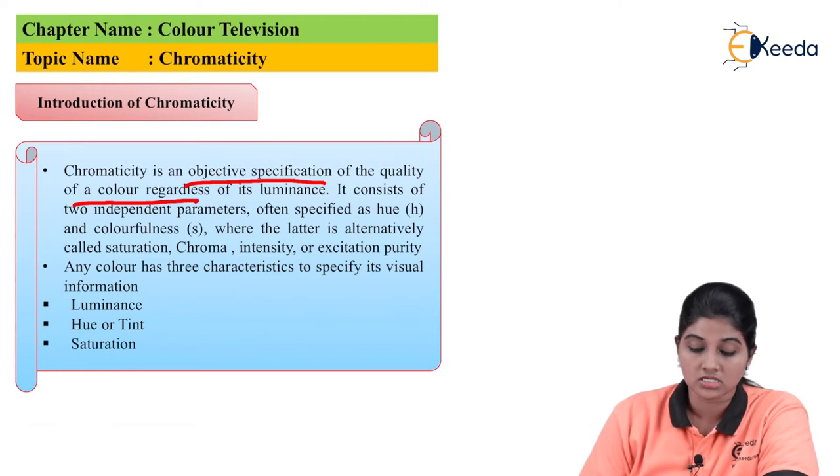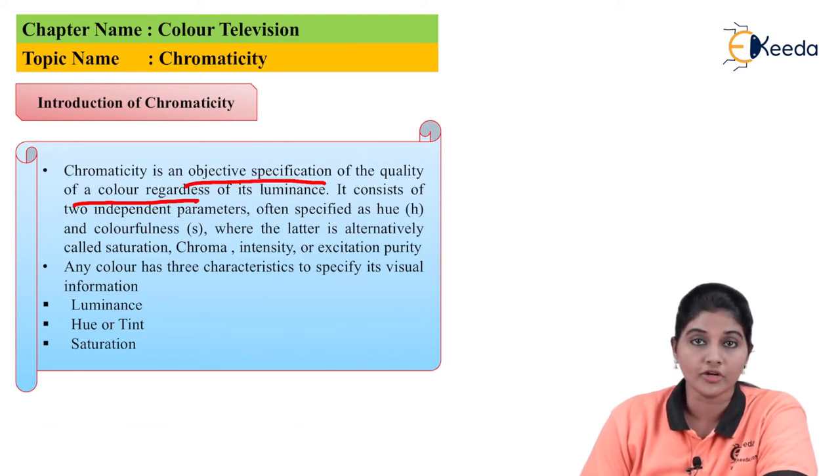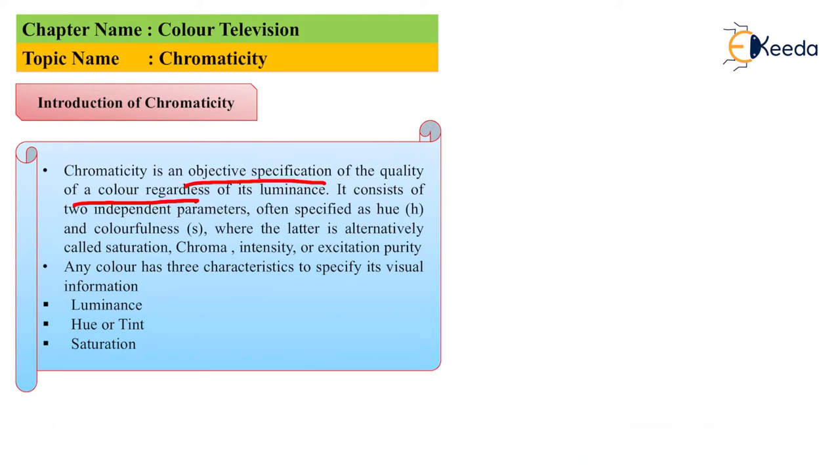Chromaticity is an objective specification of the quality of color irrespective of its luminance. It consists of two independent parameters. The first parameter is hue, also called tint, and the second parameter is colorfulness, also called saturation, chroma, intensity, or excitation purity. Any color has three different characteristics that define the visual information provided by that color.